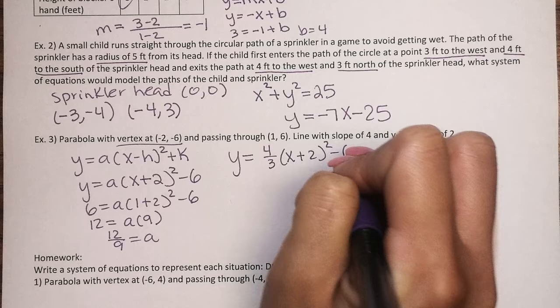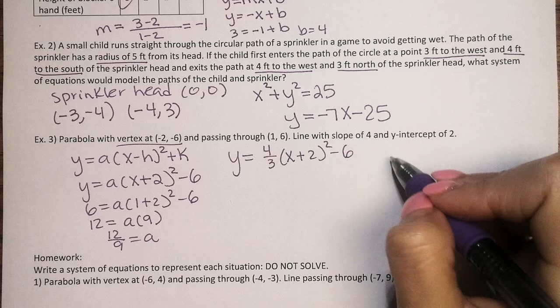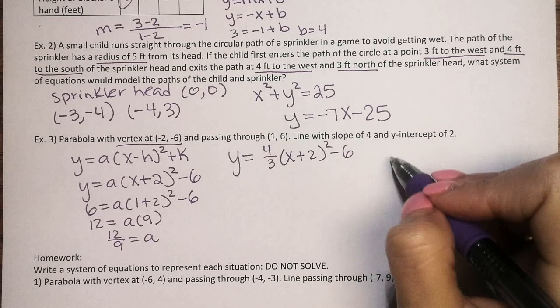And then my line, that one's just simple. It says the line has a slope of 4, so y equals 4x, and a y-intercept of 2, plus 2. So that's all you're expected to do. Just read the scenario and write down the system that could be used to solve, but you don't have to solve. Now you can do your homework.